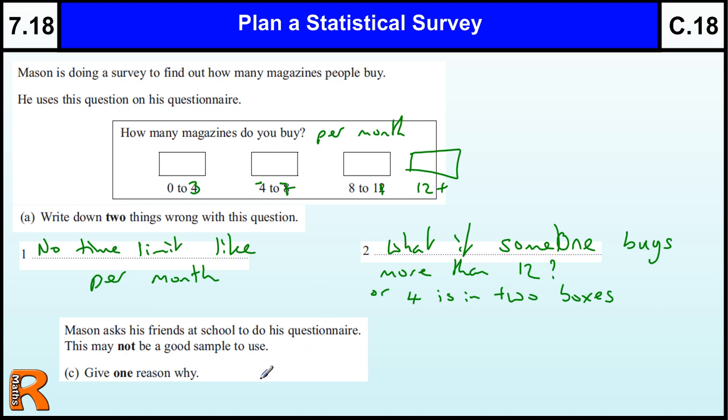Mason asked his friends at school to do this questionnaire. This may not be a good sample to use. Give one reason why. Well, he's only asking his friends, so small group, only people of the same age or similar age, only school children and not just general people. You're not asking the general public, you're just asking people you know. Quite often this sort of thing can be that they are males or females, so it's not incorporating all the possible genders. And obviously age—you need to have a range of ages you're asking to get a good survey. Okay, hopefully that's helped out a little bit there.